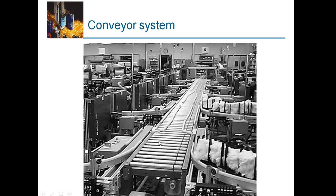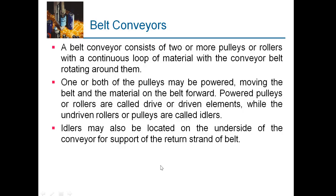There are different types of conveyor. It can be a roller conveyor where each roller may be powered, or it can be a belt conveyor or a chain conveyor. It can also be a vibrating conveyor, or transportation can take place with the help of pneumatics or air — that is called the pneumatic conveyor.